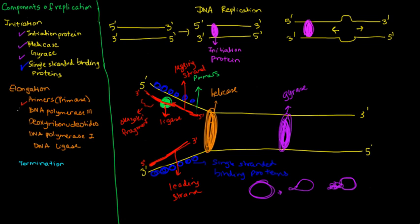So my primers, Pol III, deoxyribonucleotides, Pol I, and my ligase. So every good thing comes to an end, and so does my replication. So how does replication end in prokaryotes?